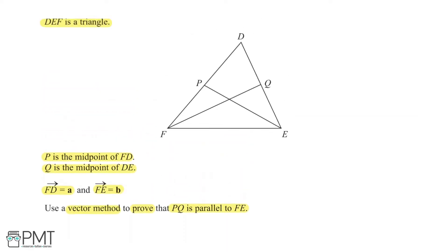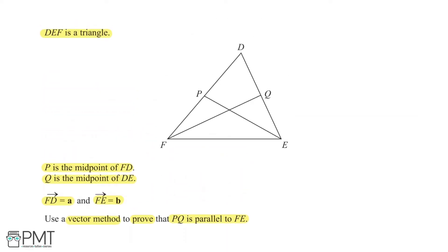First thing I like to do, because we've been given a diagram and some information, is I want to label it. So we're told that FD is A. So the vector going from F to D this way is A. And we're told that FE is B, so this way is B. One thing we know is that FP and PD are both going to be half of A, because we're told that P is the midpoint. So let me just use the correct vector notation here.